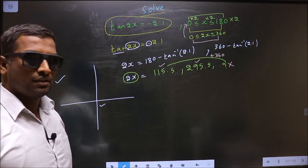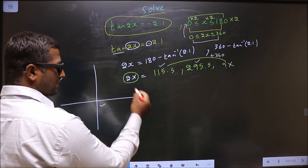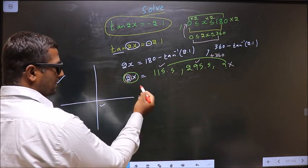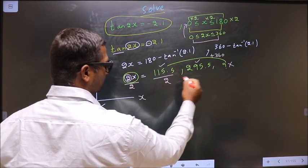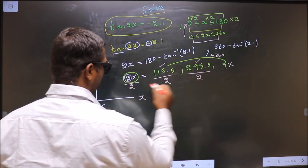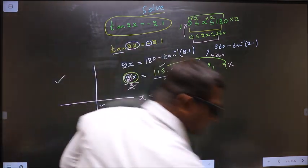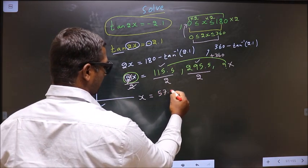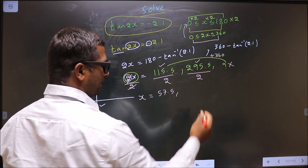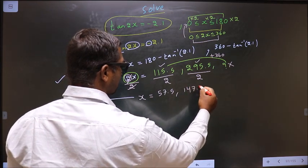Clear so far? Good. So, now to get the values for x, you should remove this 2. For that, you divide by 2 throughout. So, we get x equal to this by 2 is nothing but 57.7. This by 2 will give you 147.7.